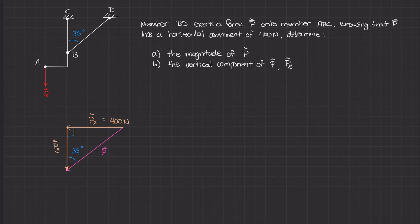Now this becomes a trigonometry problem. Looking back, the first part asks for the magnitude of P, which is the hypotenuse. We can use the 35 degree angle. Sine is equal to opposite over hypotenuse.